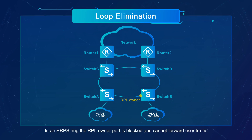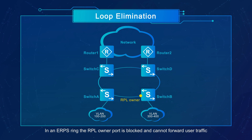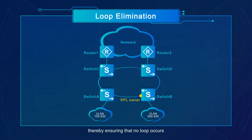In an ERPS ring, the RPL owner port is blocked and cannot forward user traffic, thereby ensuring that no loop occurs.